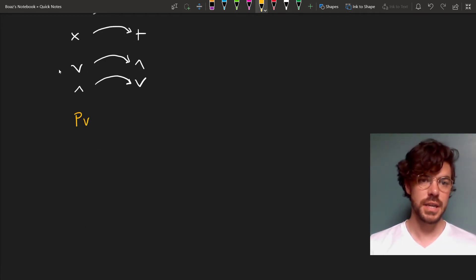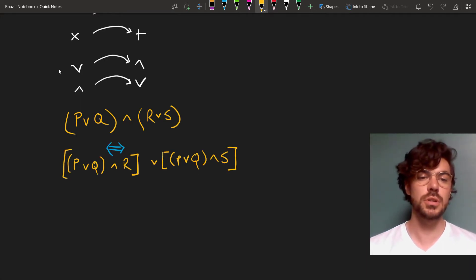So suppose we have a sentence in conjunctive normal form, like (p or q) and (r or s). We can run this through an iteration of the distribution of and over or to get the equivalent sentence (p or q) and r, or (p or q) and s.